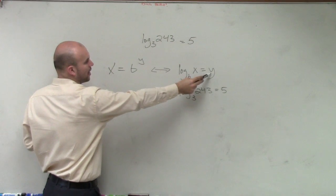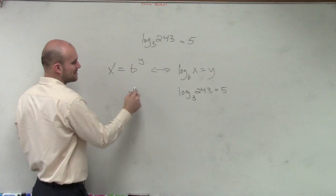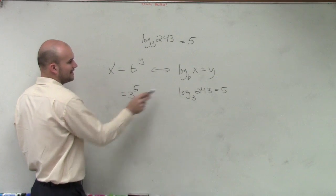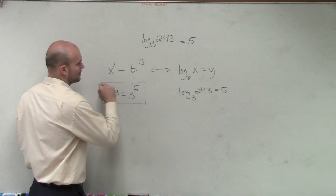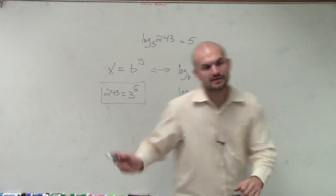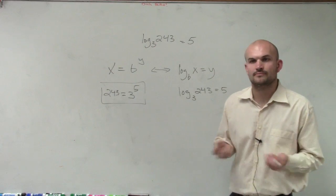So we have our what it's equal to is now our exponent. So it's going to be 3 to the fifth power equals 243. So going from logarithmic to exponential form. That's all you guys got to do.